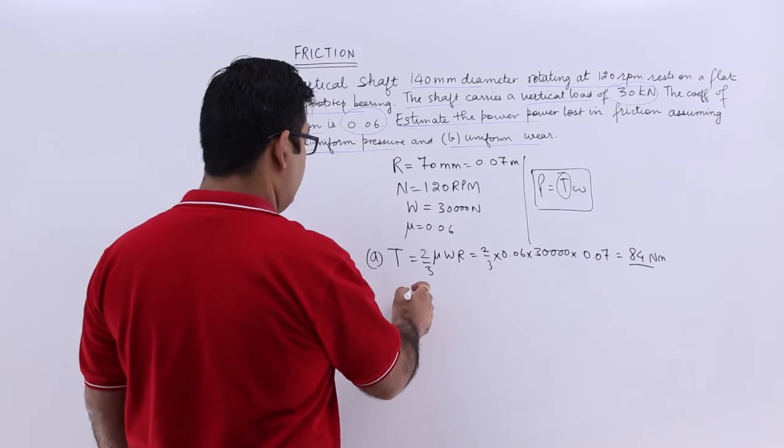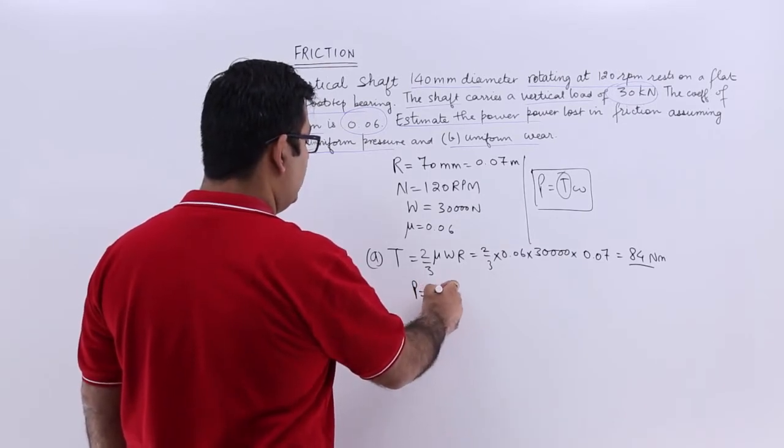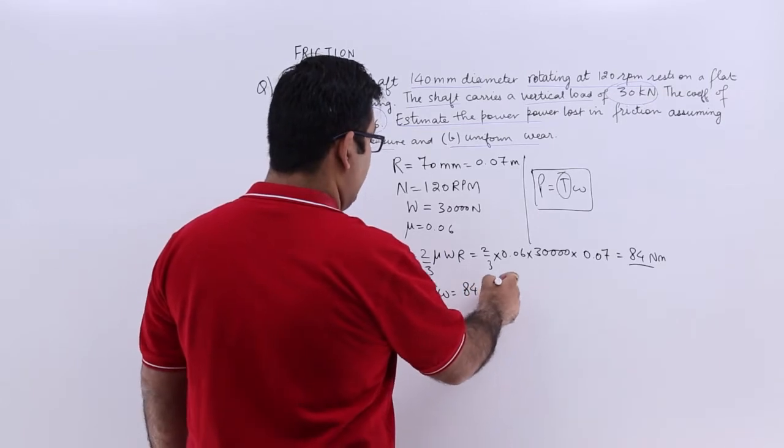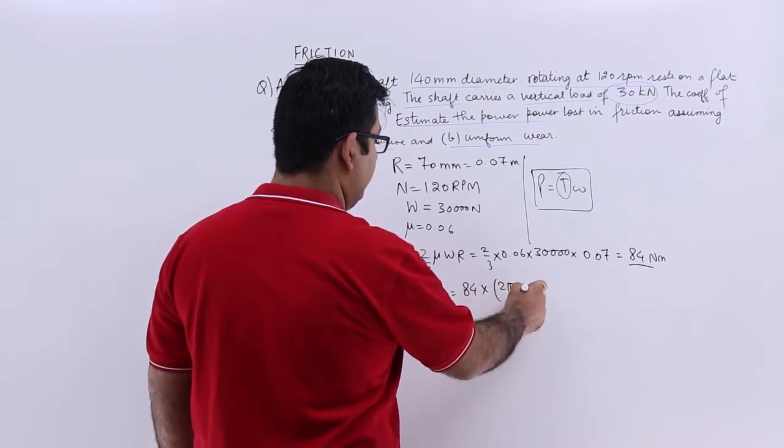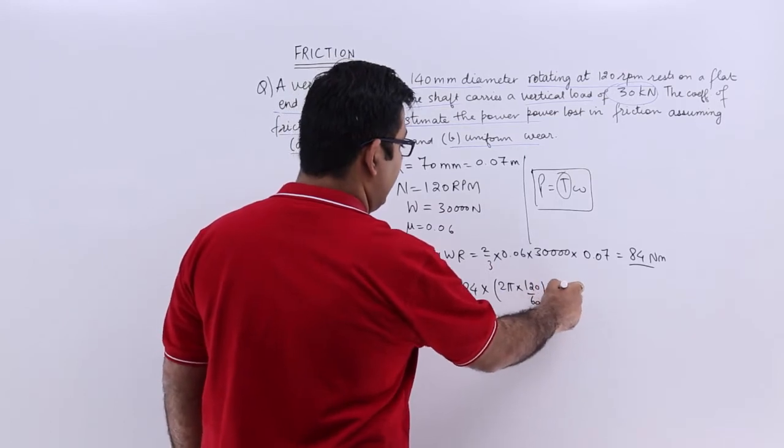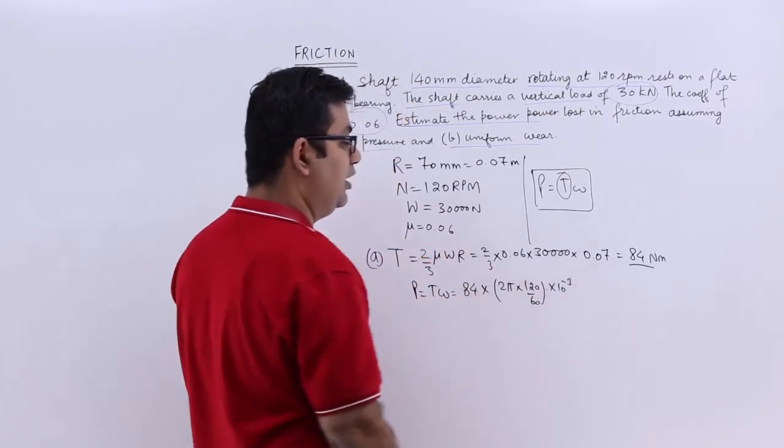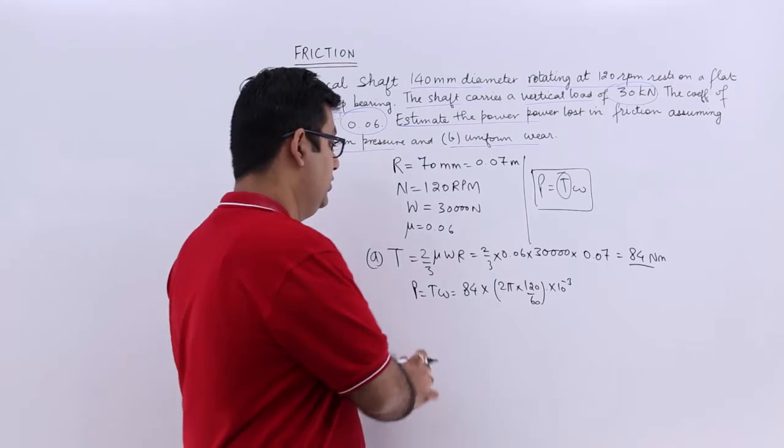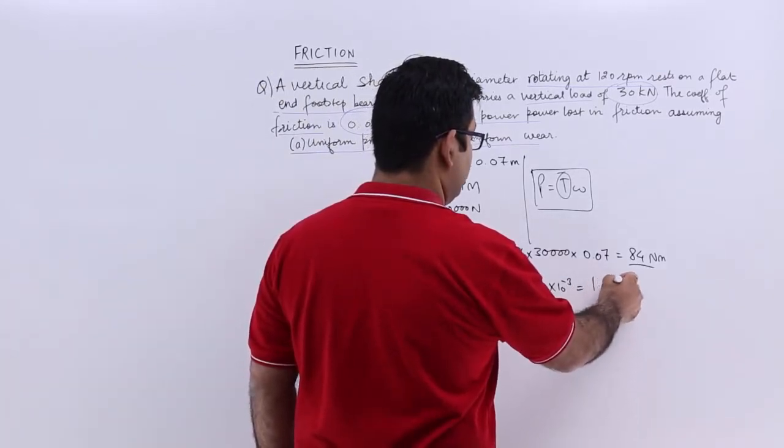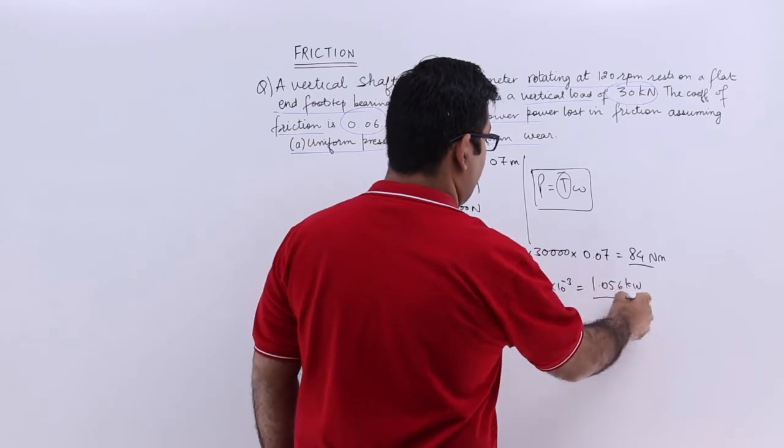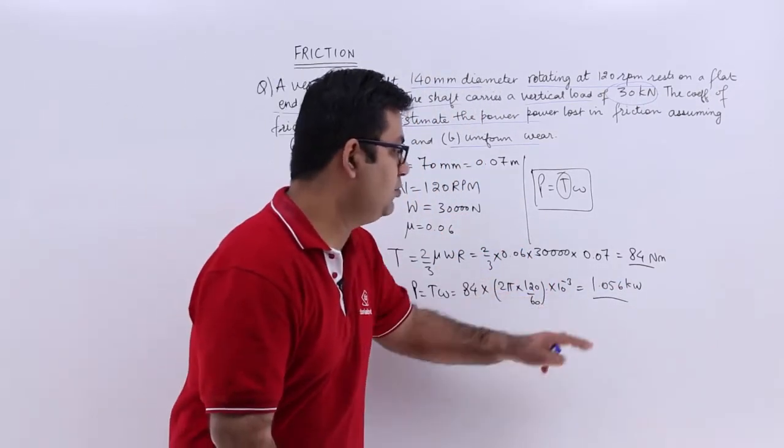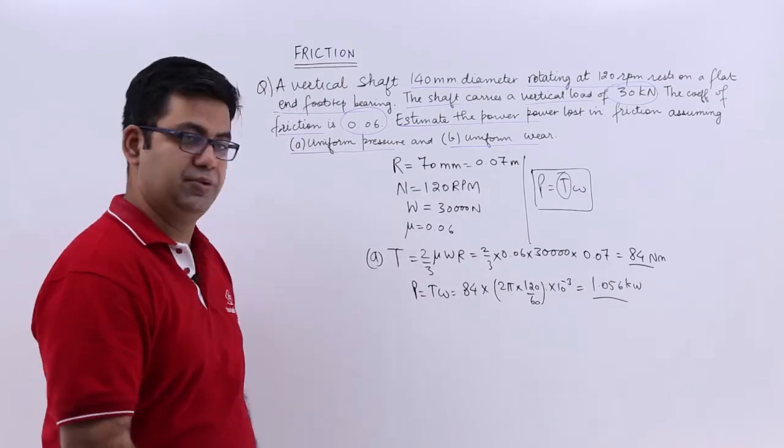Now your power would be then T into omega which is 84 into 2 pi into n by 60 into 10 to the power minus 3 to give you kilowatts. So this entire calculation results in the power lost in friction assuming uniform pressure is 1.056 kilowatt.